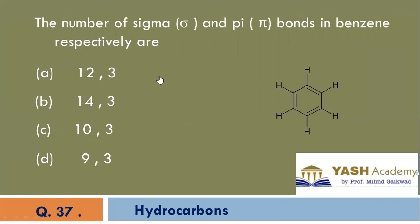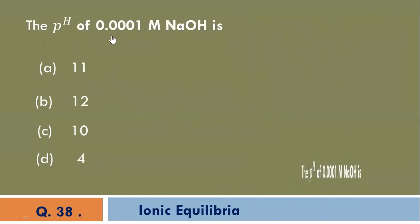The number of sigma and pi bonds in benzene respectively are. A is the correct option.